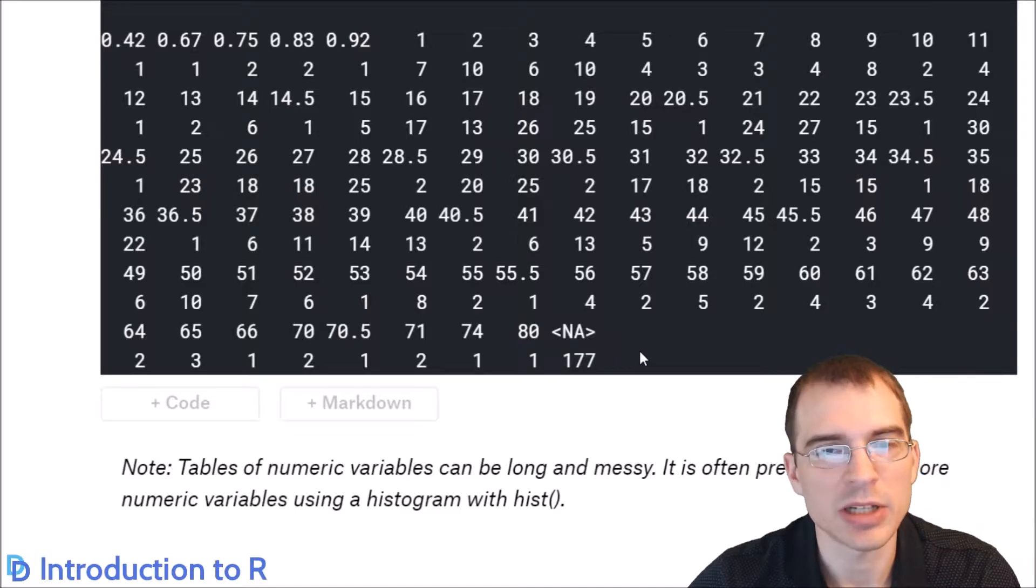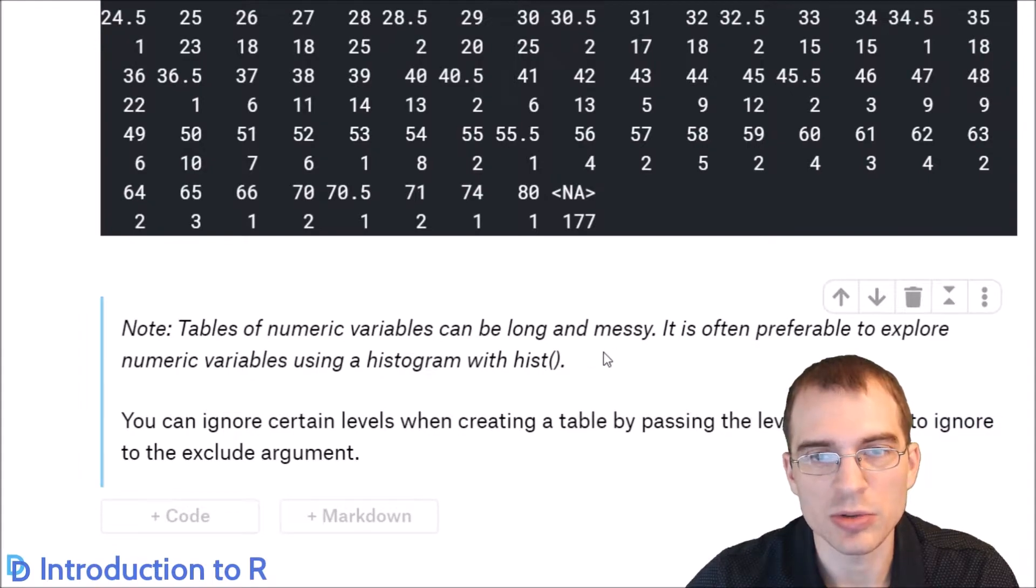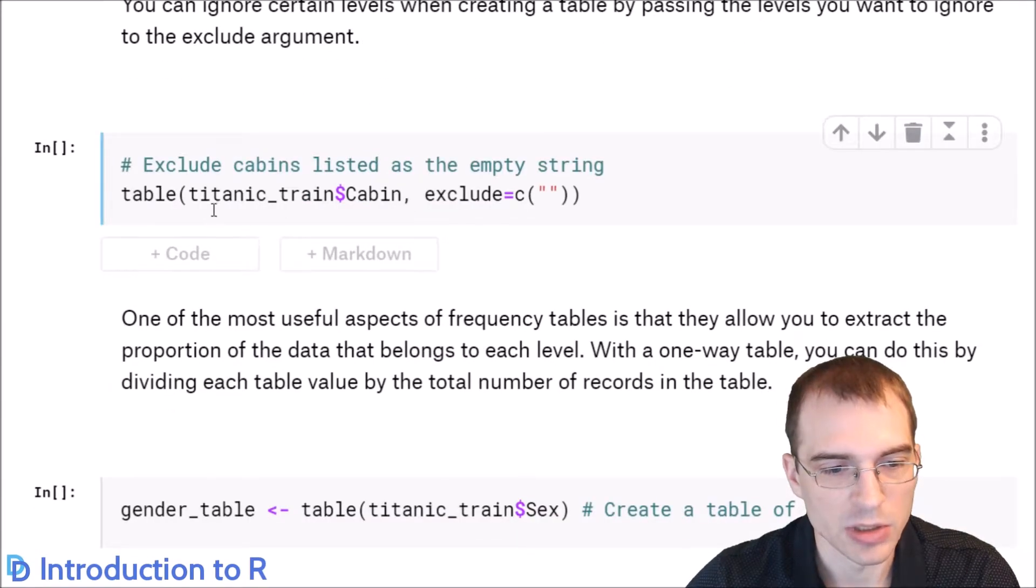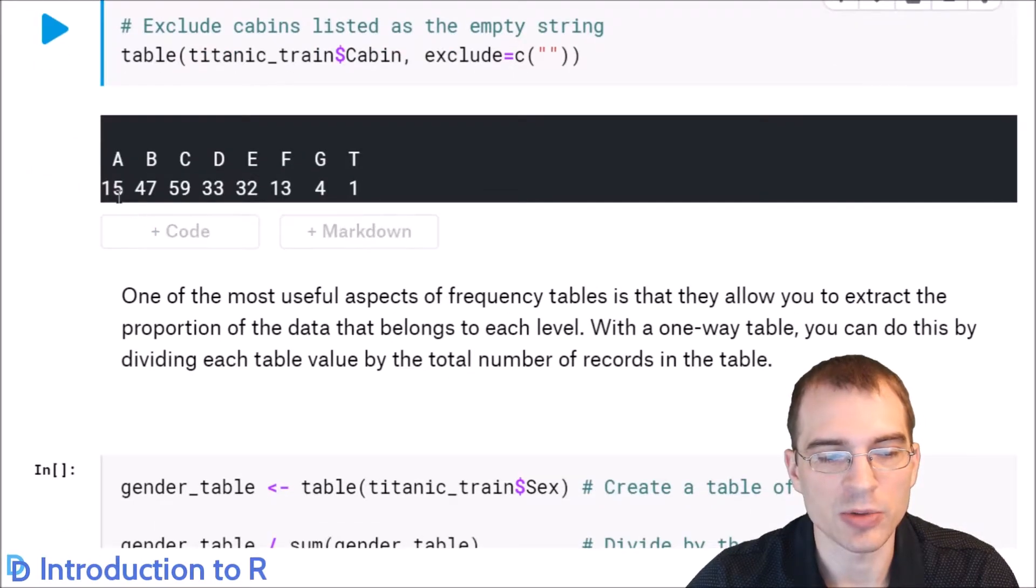Now, you can also use that exclude argument to exclude a given level of the categorical variable that you are making the table for. For instance, when we looked at the cabin, we had a bunch of missing cabins that were the empty string. So if we wanted to remake that table but exclude that, we can use the exclude argument to do that. We're going to remake that table on the cabin variable, but this time we're going to say exclude, and we want to exclude the column with the empty string as its name, so we're passing that in as the argument to exclude here. When we run this, those 600-some records that were the empty string are not included, and we only get the ones that weren't excluded.